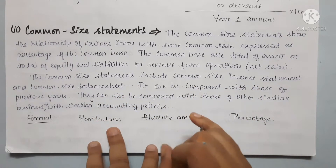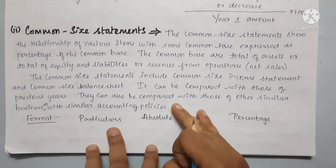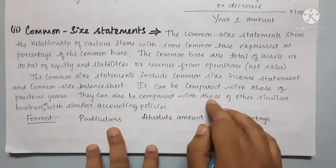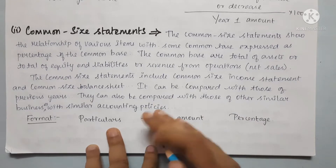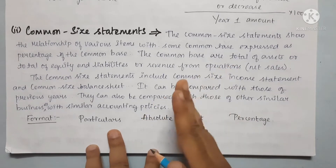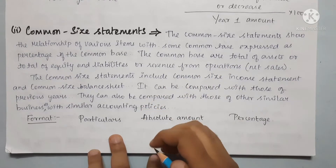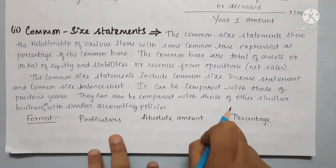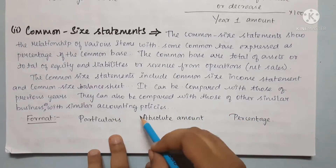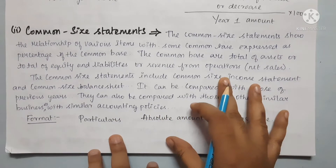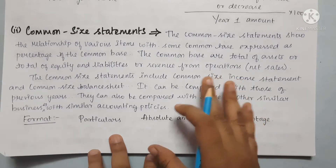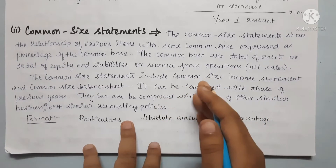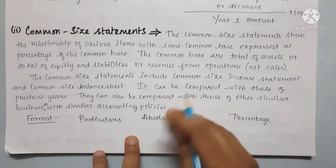Last time we covered the income statement and balance sheet. It can be compared with those of a previous year — in this case, we compare the previous year. It can also be compared with those of other similar businesses with similar accounting policies. So, in this method, we compare the balance sheet and income statement.